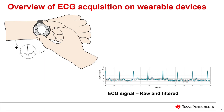The biopotential associated with the electrical activity of the heart in the vector direction between the right and left arm is recorded by such a system. A sample ECG signal is also shown. The waveform in gray depicts the raw data from the device. Additional low-pass filtering may be used to reduce the noise, resulting in the cleaner waveform in blue.